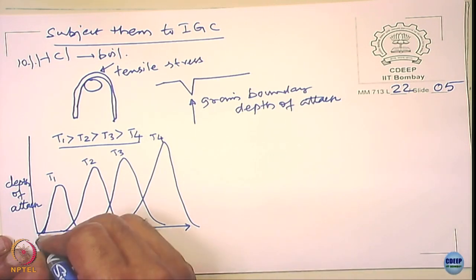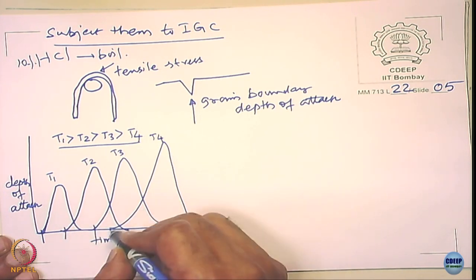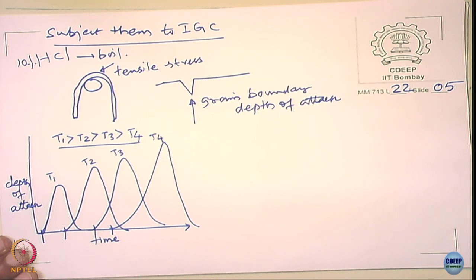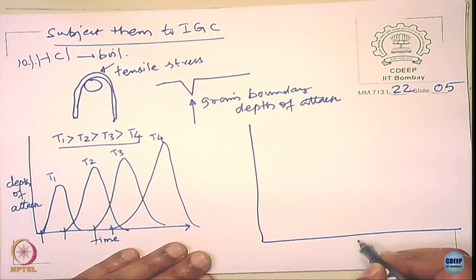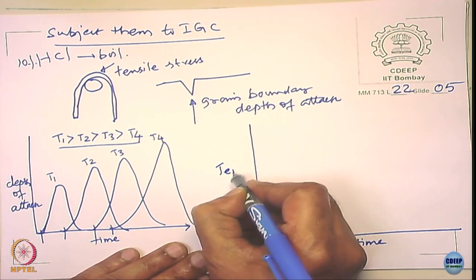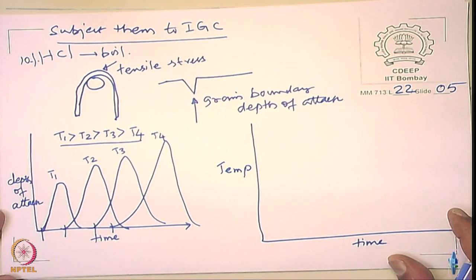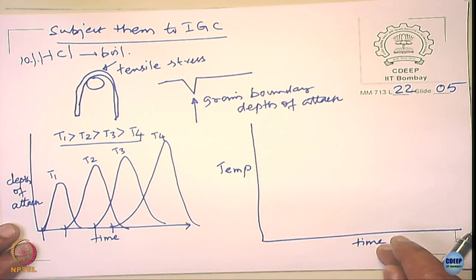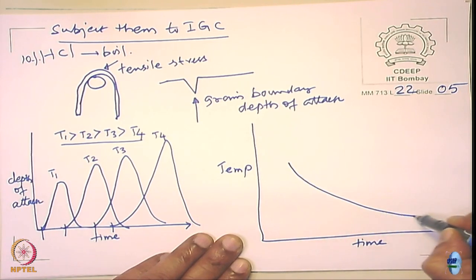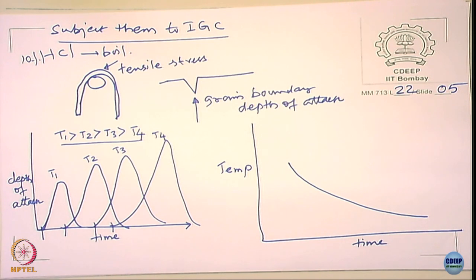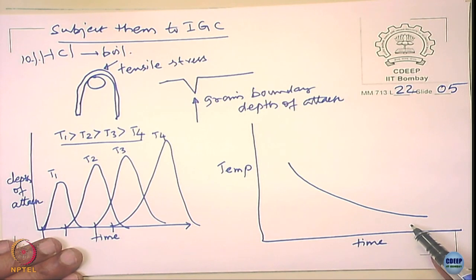What you notice is there is a time for initiation of intergranular corrosion. With several temperatures — T1 > T2 > T3 > T4 — you can find out the initiation time for each and plot temperature versus time for start of IGC. As the temperature is decreased, the time for initiation of IGC increases.